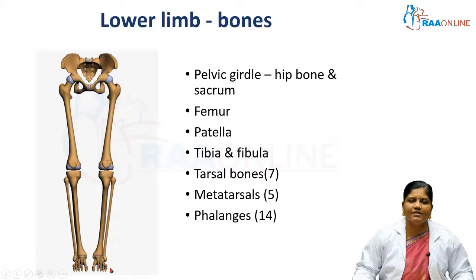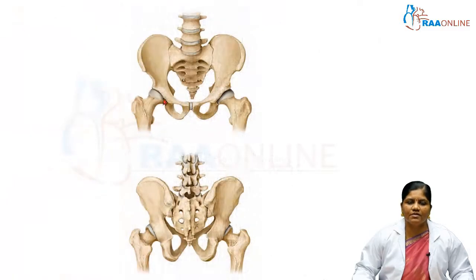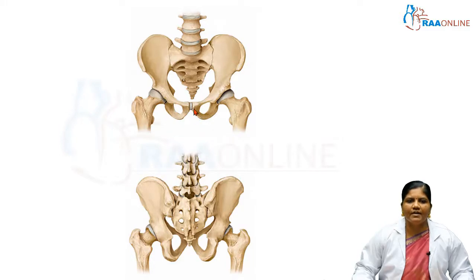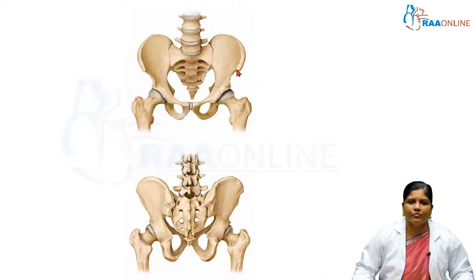Now we need to know some important landmarks before moving into the topic. The pelvic girdle on either side is made up of the hip bone. The upper expanded part of the hip bone is called the ilium, the anterior most part is called the pubis, and the other part is the ischium. The ilium has an upper curvilinear border called the iliac crest, and the anterior most point of the iliac crest is called the anterior superior iliac spine.